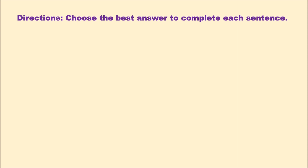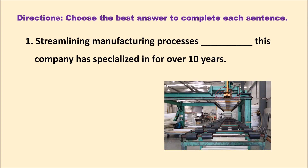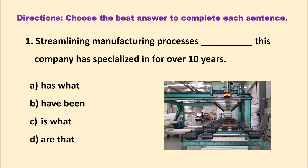Number one: 'Streamlining manufacturing processes, blank, this company has specialized in for over ten years.' A) has what, B) have been, C) is what, D) or that. In order to solve this sentence, we have to look at the subject first. Streamlining is the act of making something more efficient.